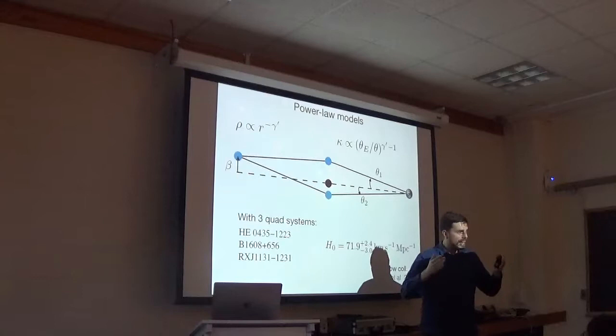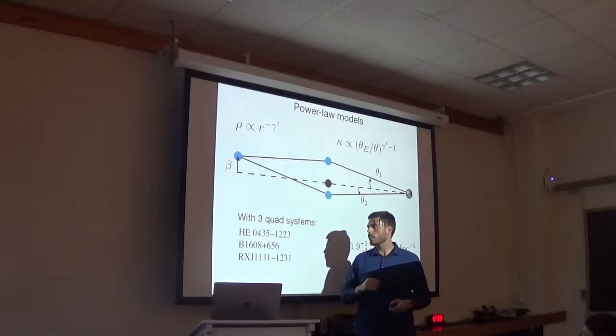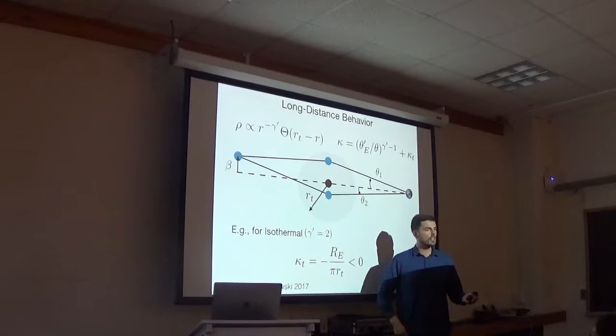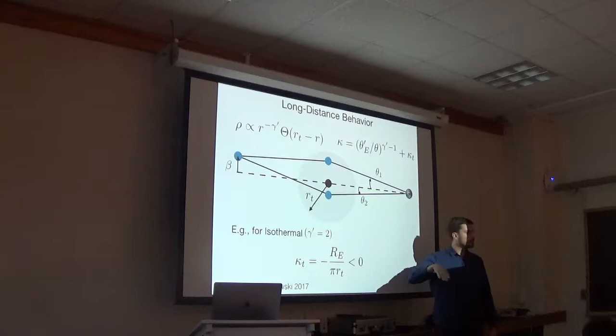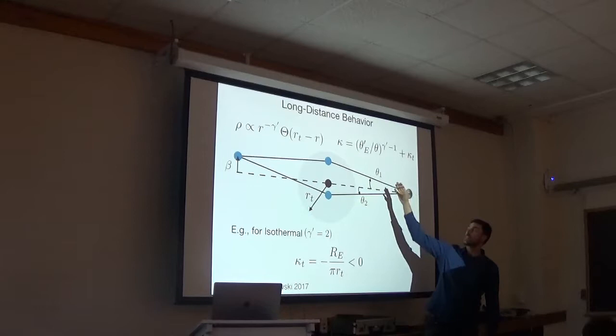What I'm going to tell you about is how the long distance behavior of lens models can affect your measurements at the 1% level. To illustrate how this works, you can see this power law distribution is clearly unphysical at long distances. Galaxies have finite regions. So you can just truncate it by adding a Heaviside theta function. And the details of the truncation are not very important.